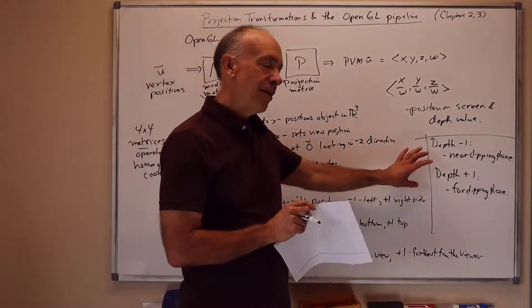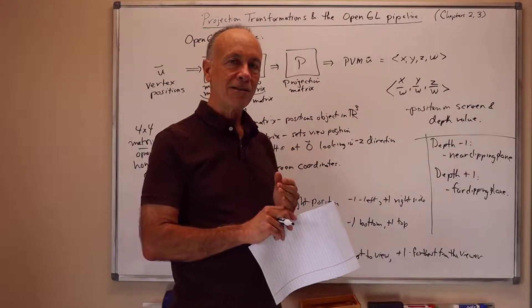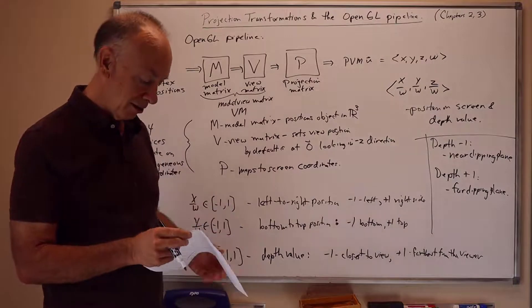So it's a slightly strange effect. We do not have any notion of arbitrarily close to the viewer. We cut it off at a certain distance, and anything closer than that just isn't rendered. It just isn't shown at all.